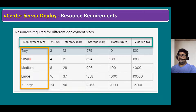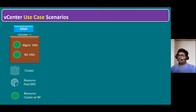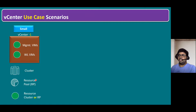Now let's understand how many vCenters we can deploy and compare across three scenarios: small, medium, and large. For a small organization, normally one vCenter server is enough. Within that one vCenter server, we can create a datacenter and a cluster. Under the cluster, we can enable vCenter features like HA, DRS, and vSAN. Within our cluster, we can also configure a resource pool — a pool of resources that provides CPU and memory to all virtual machines.